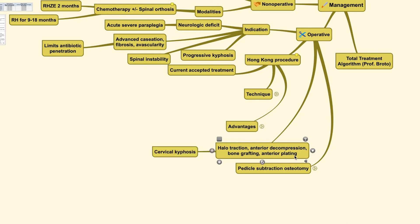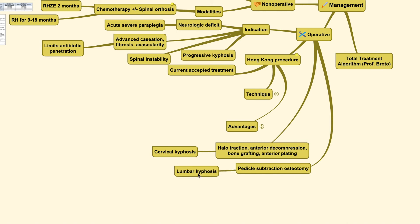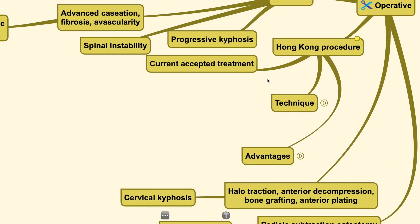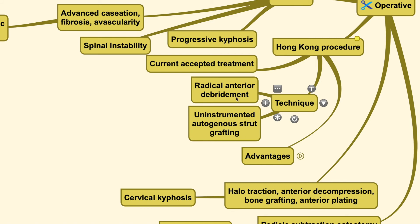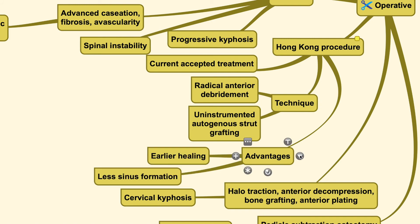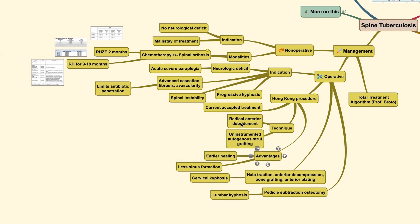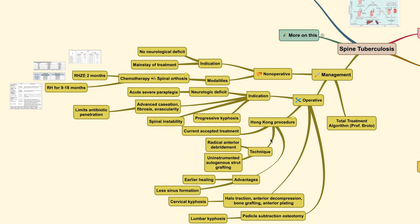For the Hong Kong procedure, which is the currently accepted treatment plan, the technique includes radical anterior debridement, fusion surgery, and uninstrumented autogenous strut graft to fuse the vertebrae from one vertebral body to the other. The advantages of this technique are that it allows earlier healing, less sinus formation, and because no implant is used, there is definitely no foreign body present.